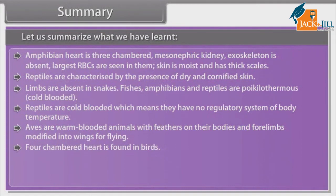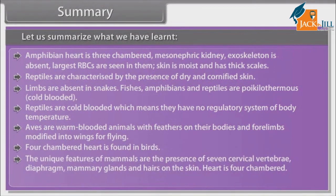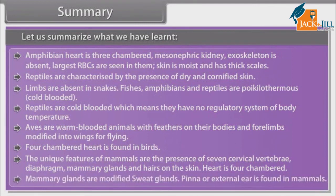Four-chambered heart is found in birds. The unique features of mammals are the presence of seven cervical vertebrae, diaphragm, mammary glands and hair on the skin. Heart is four-chambered. Mammary glands are modified sweat glands. Pinna or external ear is found in mammals.